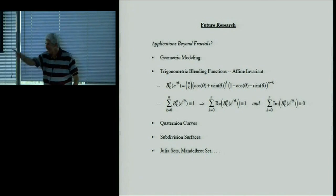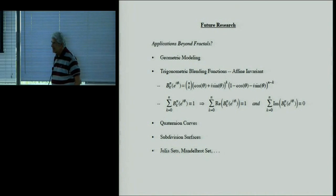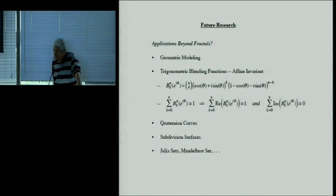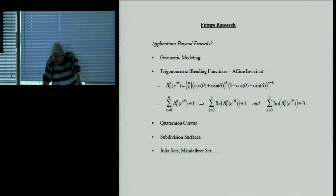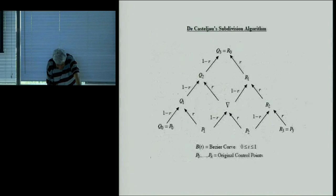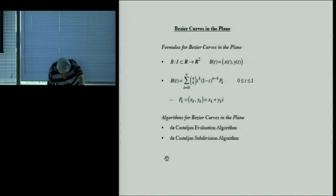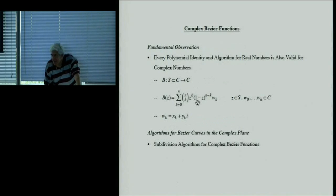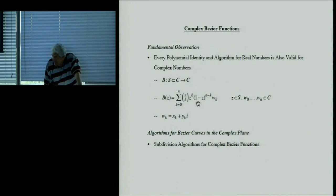Audience question: when you introduce complex parameters and complex control points and use the Bézier scheme in the complex setting, aren't the points in C² rather than C? In fact, that's not right — the points are actually in C. In the formula, Z is a complex number, W_k is a complex number, and multiplying them gives a complex number. For each Z you get just one complex number.